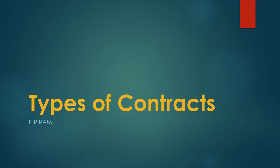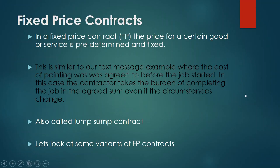Welcome to another lecture on contracts. Today we're going to look at the different types of contracts. Let's start with fixed price contracts — these are the most common ones. In fixed price contracts, the price is fixed for the good or service and does not change. It's also called a lump sum contract, or in short form, FP contracts.